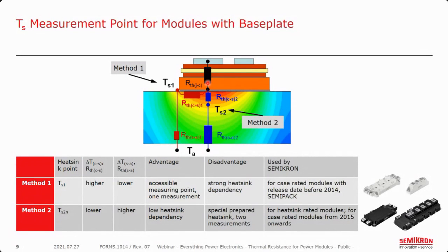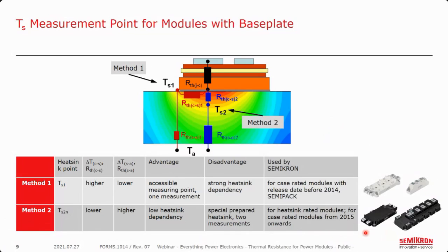Semicron has used both methods. In the past, for our base plate modules such as Semicx with spring pins, we used method one. This method is still used for our thyristor and diode modules such as the SemiPak family. Since roughly 2015, all new IGBT modules use this reference point below the module. And to reiterate, all base plate-less modules — such as the mini-skip — have always used the heat sink temperature beneath the module, method two. If you have any doubt about where the measurement point is for a particular module, please consult the technical explanations document for that particular product line.